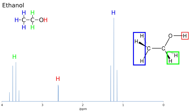If we further compare these groups to the NMR spectrum of ethanol, we find the same three distinct groups with a relative intensity that matches the amount of protons present in that group.